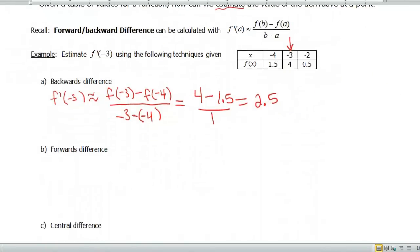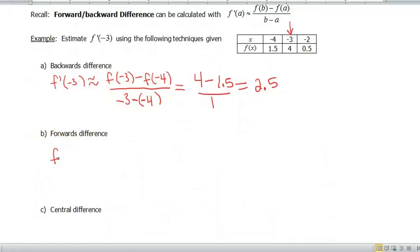Forwards difference. We're now going to use the value forward or in front of -3, so in this case that's going to be -2. So we're going to do f(-2) minus f(-3) all over -2 minus -3. Using the values off the table, f(-2) is 0.5 minus f(-3) is 4, and that's all over a positive 1, which gives us a value of -3.5.